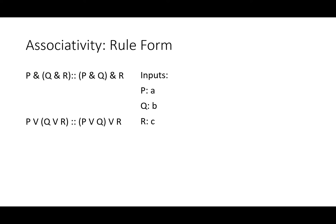Let's plug in some inputs to see how associativity works. A and B and C is the same as A and B and C, and A or B or C is the same as A or B or C. No surprise there.